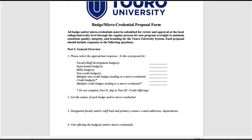Looking at the actual application, the main proposal form is divided into three parts. The first part every individual must complete. Part one begins with a question asking what type of badge or micro-credential is being proposed, then asks the individual to list the names of each of the badges and/or micro-credentials being proposed. Question three asks for the lead faculty or staff member responsible for these badges, as well as the unit that will be responsible for offering them.